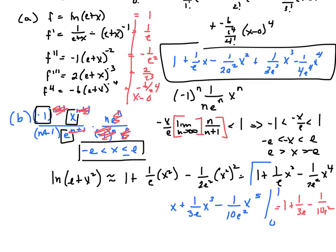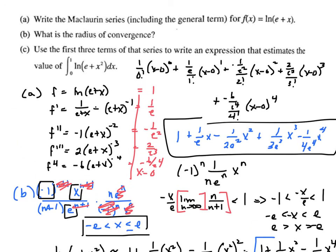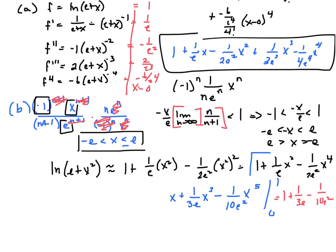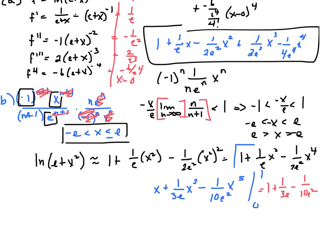Again, this was kind of an odd problem in that it had us find the Maclaurin series in the beginning for this, and then changed it in this problem. So all that meant was where it used to be an x, we substituted an x squared. So we did that down here, and then we integrated it.